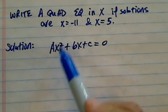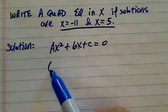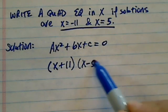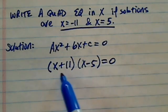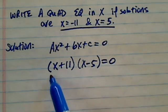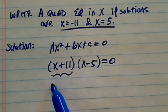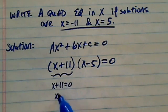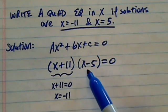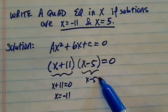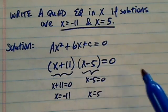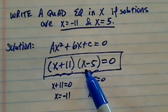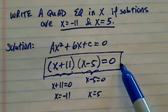So what we need to do is plug those equations back in. We use x plus 11, because we were told that minus 11 is a solution — that means x plus 11 equal to 0, which gives x equal to minus 11. Similarly, x minus 5 equal to 0 gives x equal to 5. So our equation is x plus 11 times x minus 5 equal to 0.